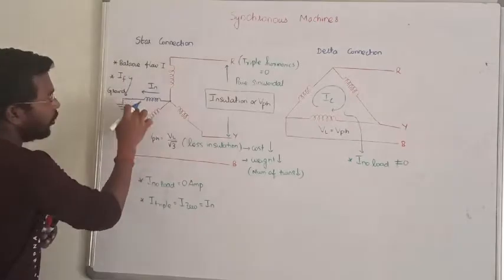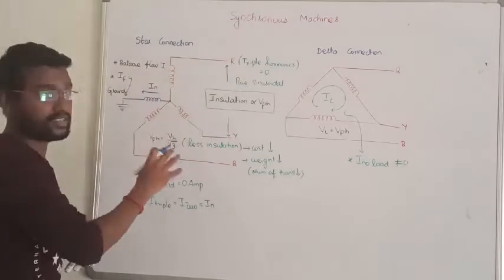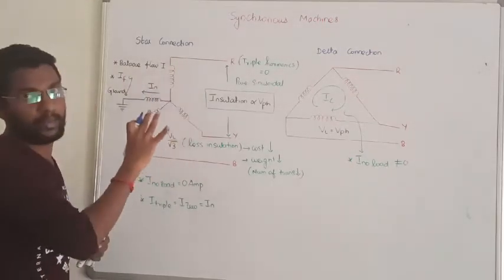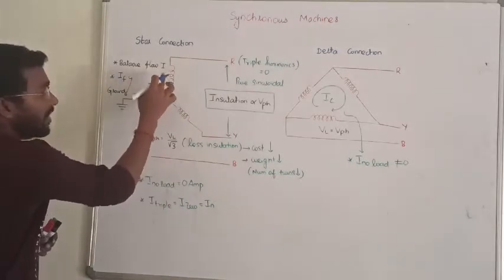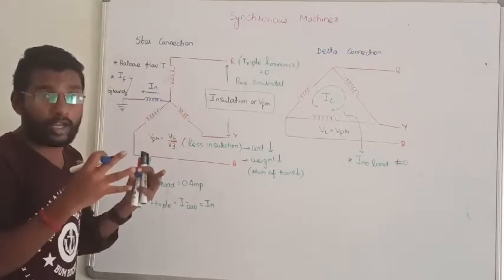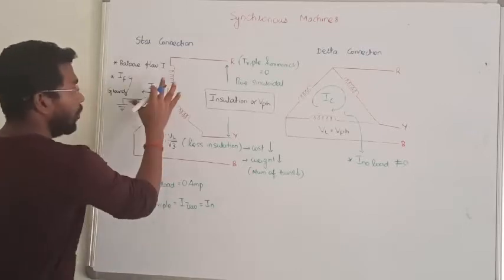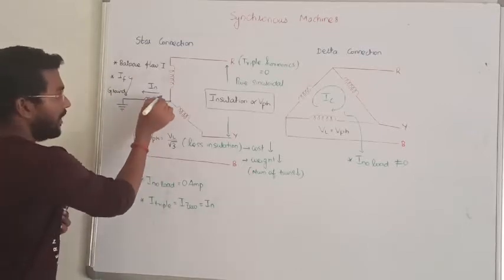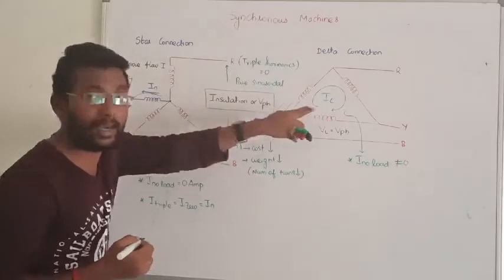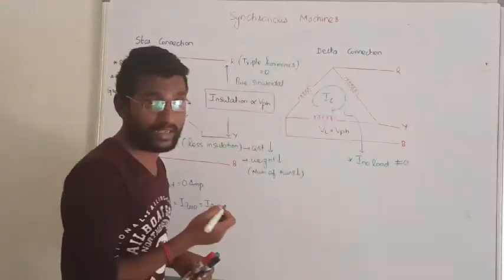The current will be balanced and the voltage will be balanced. If the voltage is balanced, it will be divided through the neutral line. This is the advantage of delta — because there is no neutral line in the case of delta connection.